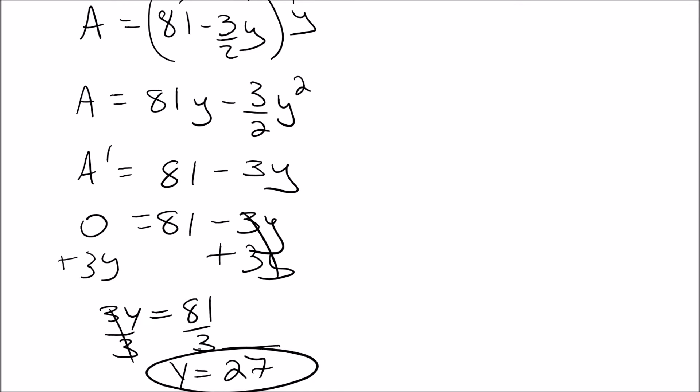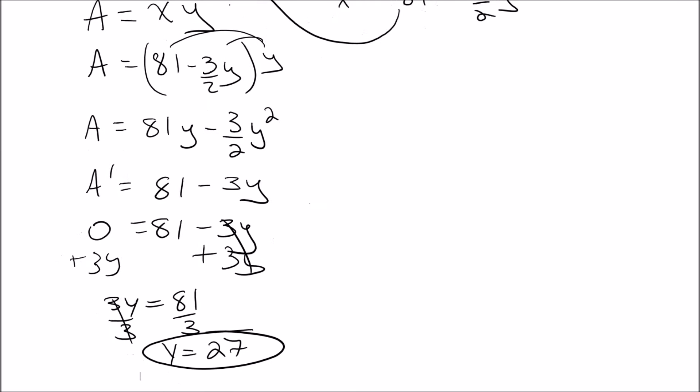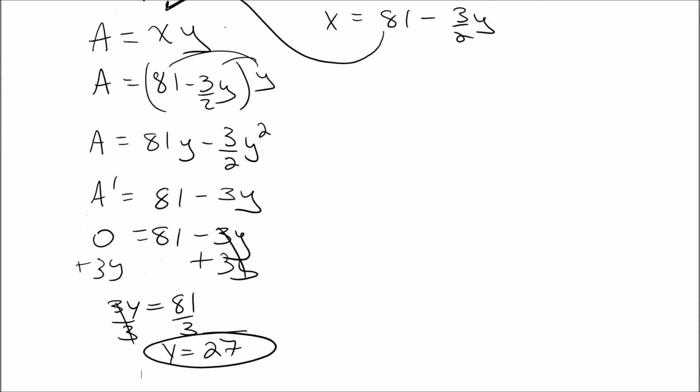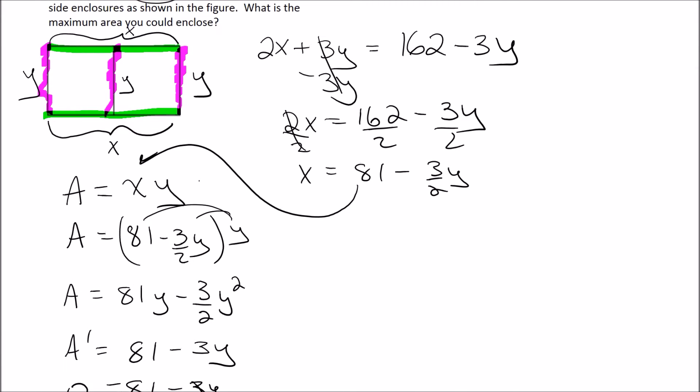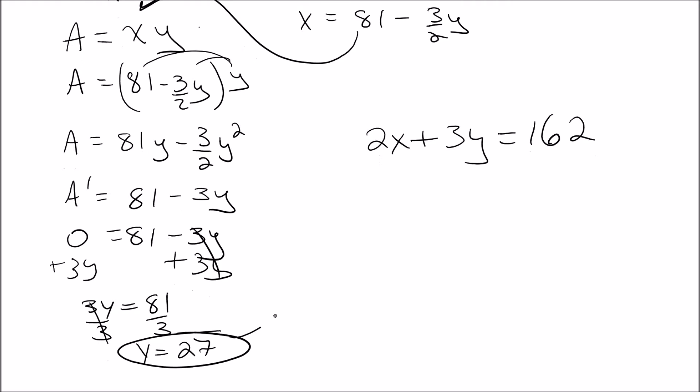So we'll get 3Y equals 81, and then divide by 3 and we'll get that Y is 27. So now that we have Y is 27, we can go back to our perimeter equation, which was 2X plus 3Y equals 162. So we'll take our Y value of 27 and put that back in. So 2X plus 3 times 27 equals 162. We already know 3 times Y was equal to 81 from before.